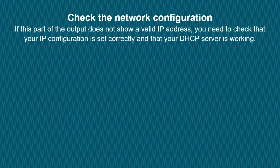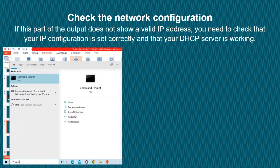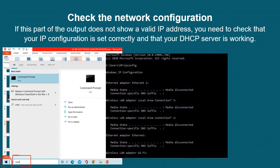Next is checking the network configuration. If this part of the output does not show a valid IP address, you need to check that your IP configuration is set correctly and that your DHCP server is working. To do that, go to the Start button and type CMD in the search bar. The command prompt will appear — click on it. Once you are at that page, type ipconfig.